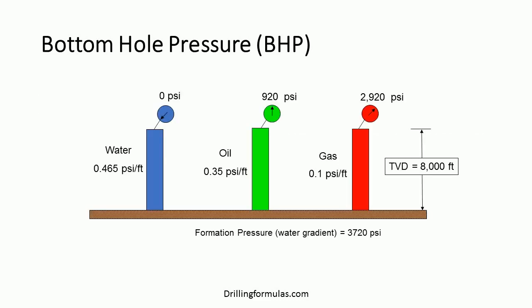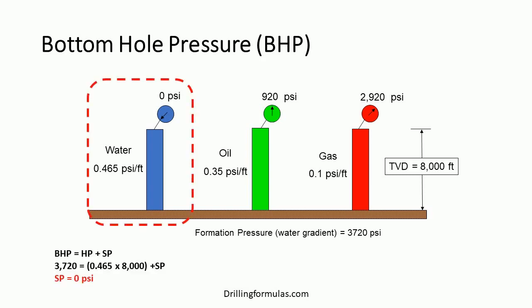For more understanding, please follow this example below. It will demonstrate the relationship of bottom hole pressure, surface pressure, and hydrostatic pressure. We assume that formation pressure is the normal pressure gradient of water — 0.465 psi per foot — so formation pressure at 8,000 ft TVD is equal to 3,720 psi.